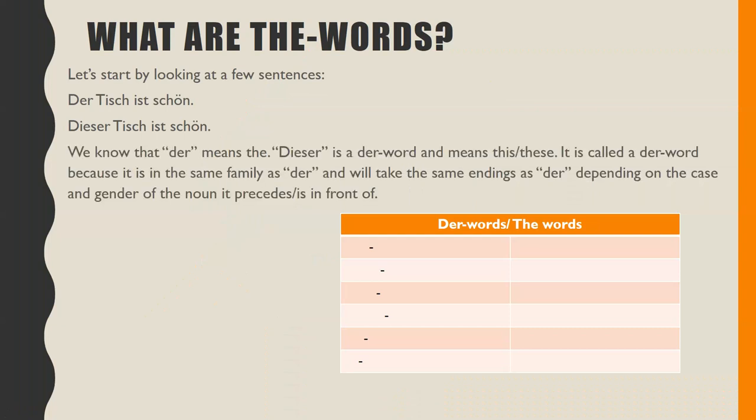We know that 'der' means 'the.' 'Dieser' is a der word, which means 'this' or 'these.' It is called a der word because it is in the same family as 'der' and will take the same endings as 'der' depending on the case and gender of the noun it precedes, or is in front of.